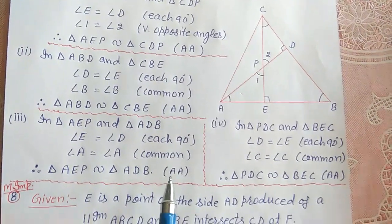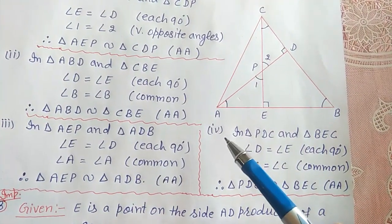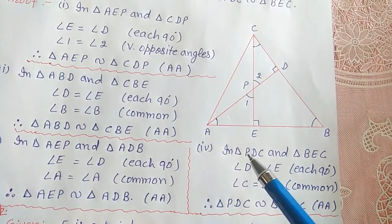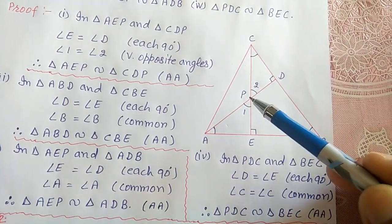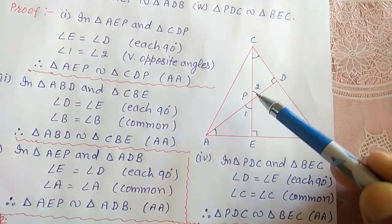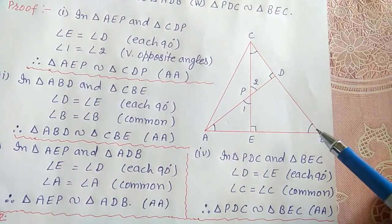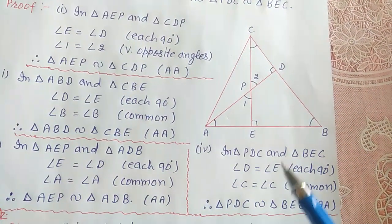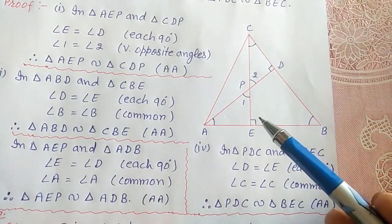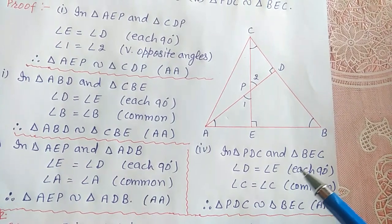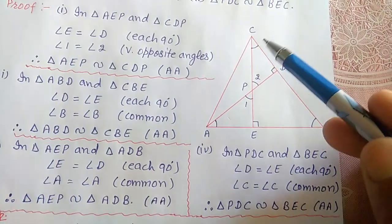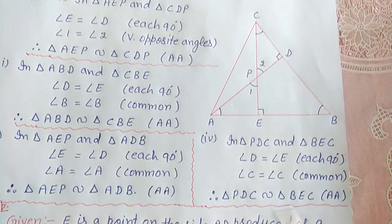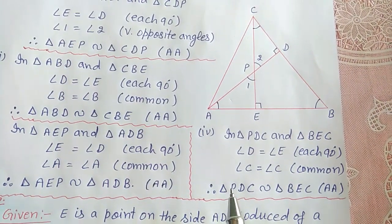For the fourth part, in triangles PDC and BEC: angle D equals 90 degrees, angle C is common to both. Therefore, triangle PDC is similar to triangle BEC by the AA criterion of similarity.